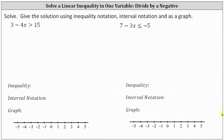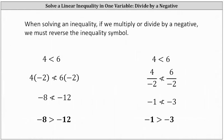Let's take a look at why that is. On the left, if we begin with four is less than six, which is true, and multiply both sides by negative two, we would have negative eight is less than negative 12, which is false. That is why we must reverse the inequality symbol and write the inequality as negative eight greater than negative 12.